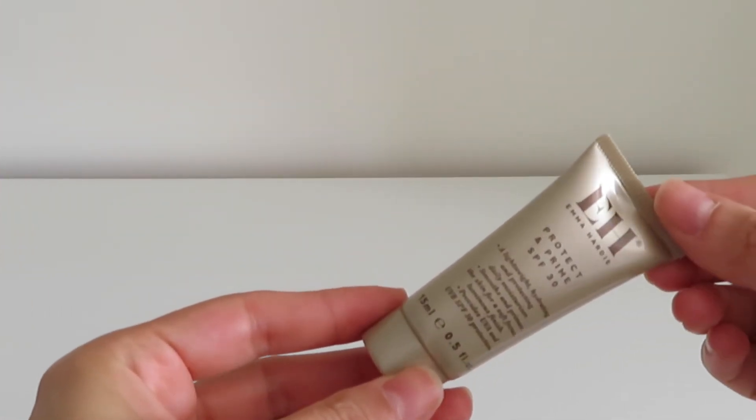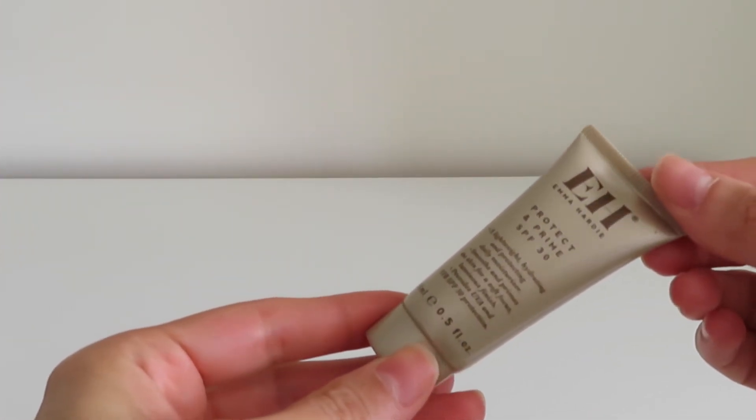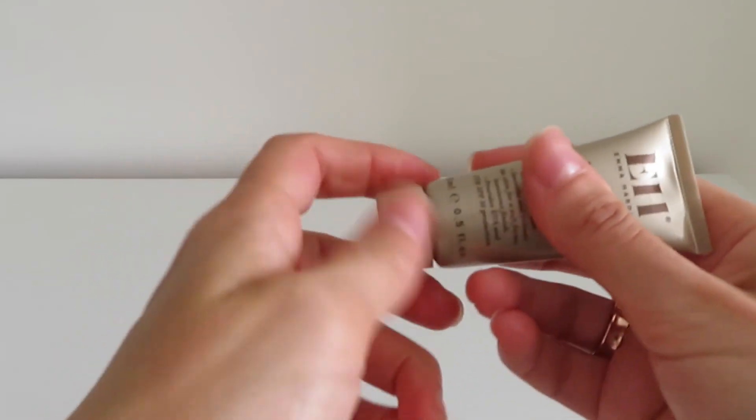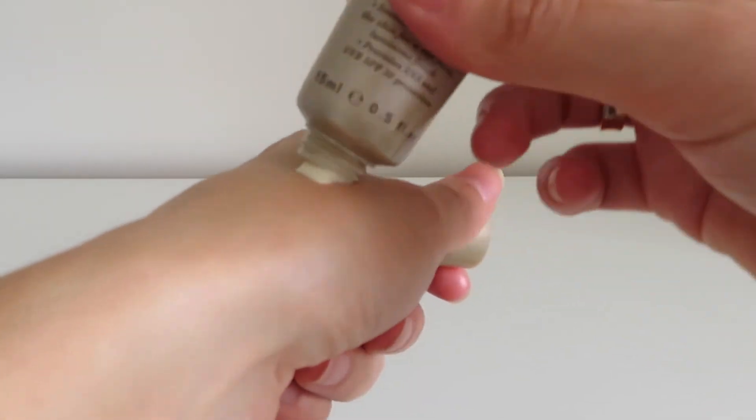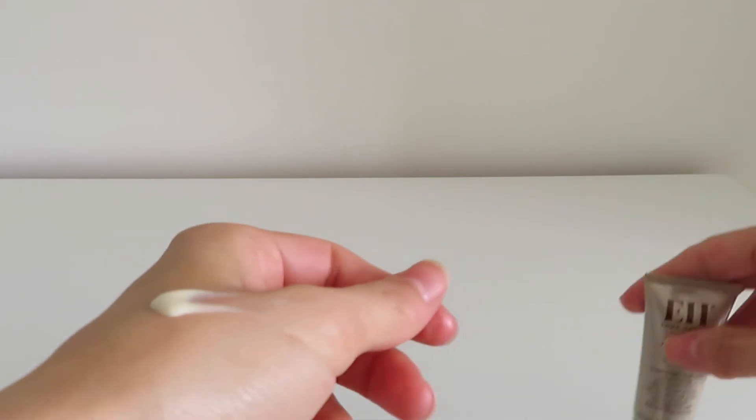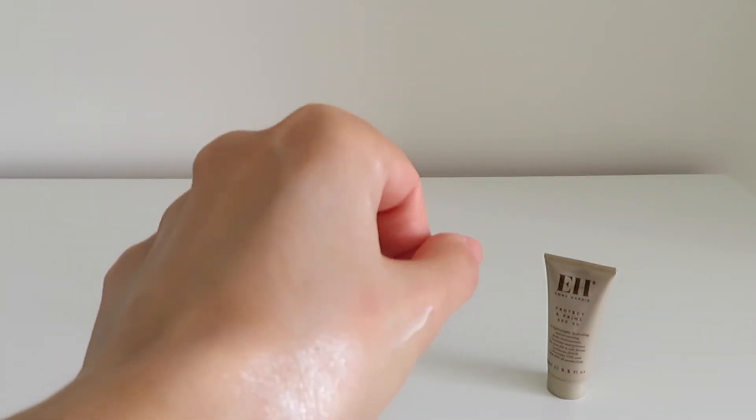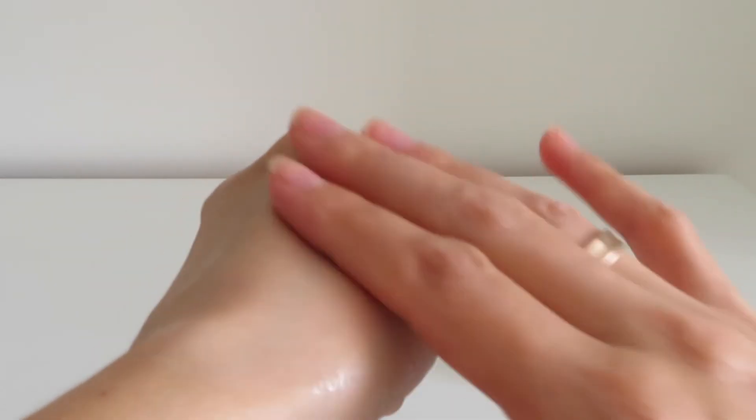Next sunscreen is from Emma Hardy Protect and Prime with SPF 30. About this sunscreen, I have good things to tell. It's really nice. It's not greasy. It's applying beautifully. I like the formula.